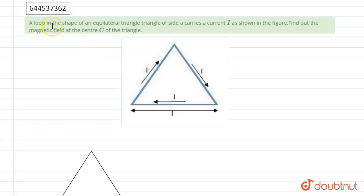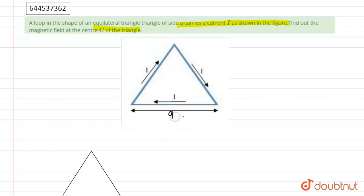According to the question, a loop in the shape of an equilateral triangle has side length A and carries current I. As shown in the diagram, we need to find the magnetic field at the center of the triangle.